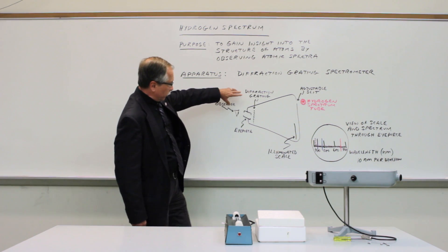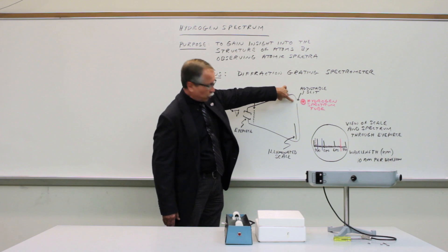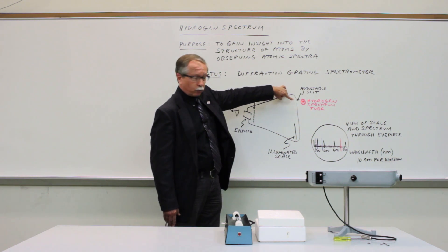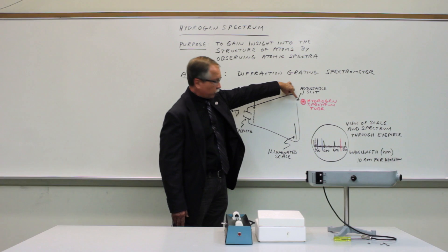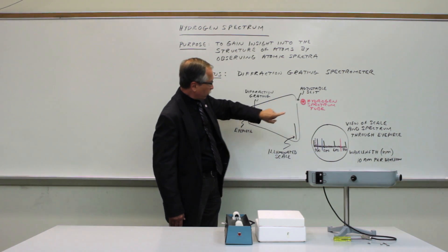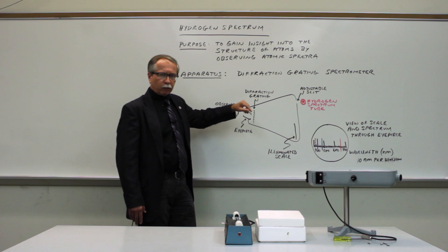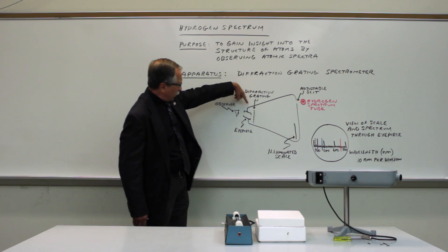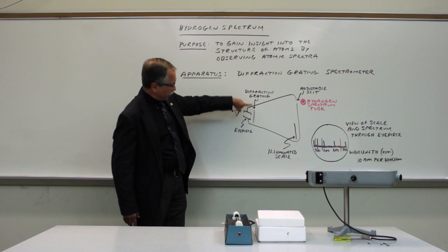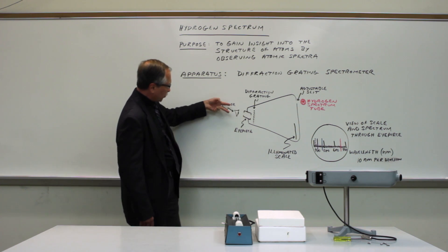What we have is a variable slit at the entrance of the instrument and the light from the hydrogen spectrum tube passes through the slit. The slit is adjustable to allow you to change the amount of light that enters. And then the light passes through a diffraction grating right in front of the eyepiece.